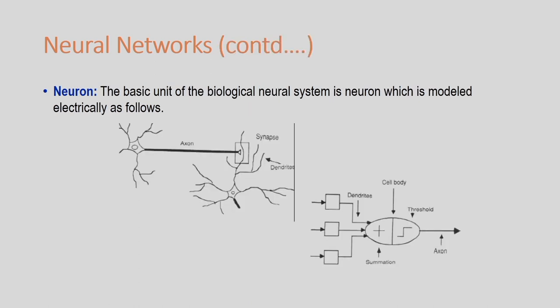The same concept is shown in the second figure. The signals are collected by the dendrites and these signals are summed up. If the sum signal is greater than a particular value, then the signal is transmitted via the axon. This is the concept of the biological nervous system, and the same thing can be implemented in the artificial neural network.